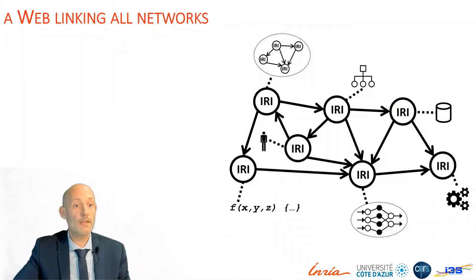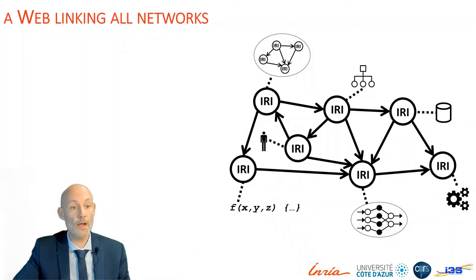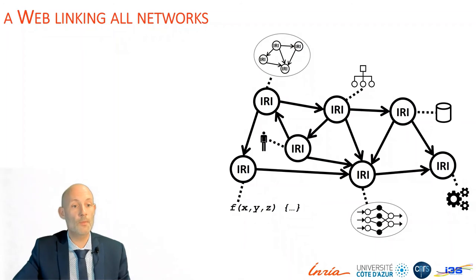This means that now on the web, the same graph can be the input data for a service and the computation network for another. On the web, we now have knowledge graphs and computational graphs and networked applications captured in a linked way in one hypermedia graph, opening many perspectives in terms of interoperability and decentralization.